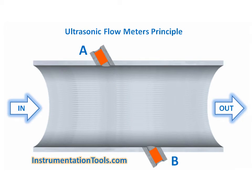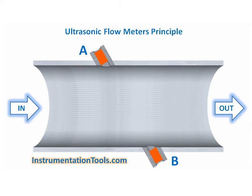When the fluid moves faster, the frequency shift increases linearly. The transmitter processes signals from the transmitted wave and its reflections to determine the flow rate.